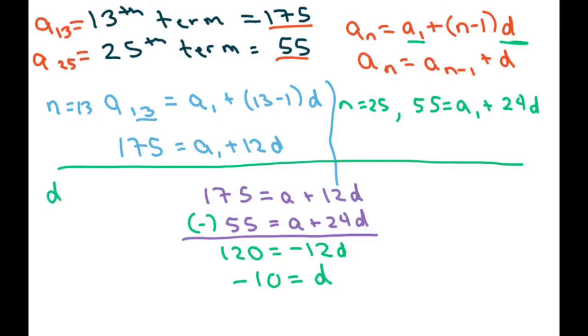So we have our d equals negative 10, and now we find our a. You plug your d back in to one of these. I'll just plug it in to this one. Doesn't really matter.